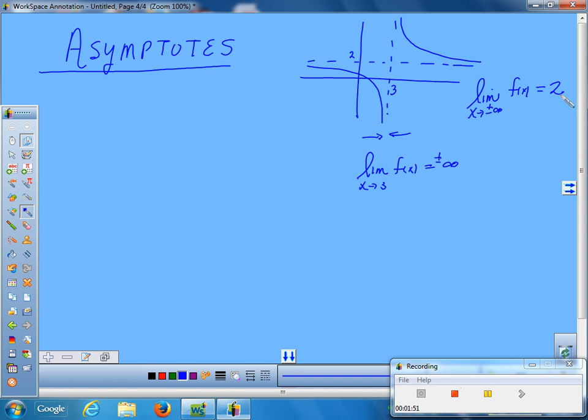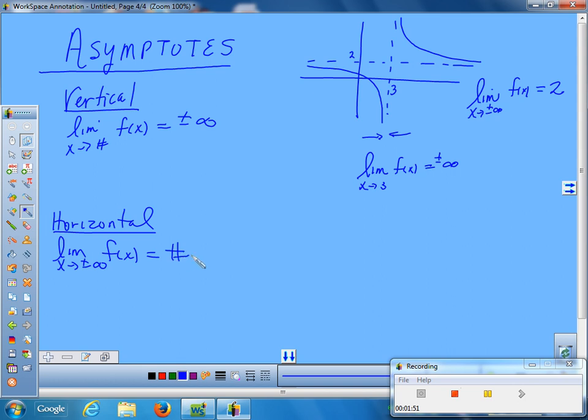So verticals, we'll spell this out for you. Verticals happen when you're doing a limit going to a number, and you get infinity. Horizontals happen when you're going to infinity, and you get a number. To me, they're the exact reverse of each other. The question, you're going to have one question with this. And suppose I told you I wanted you to find me the asymptotes for this function.